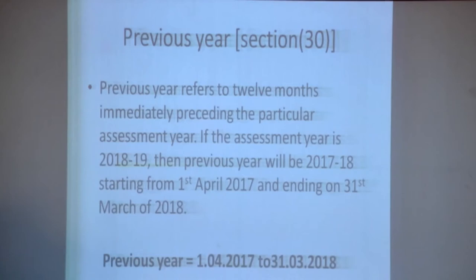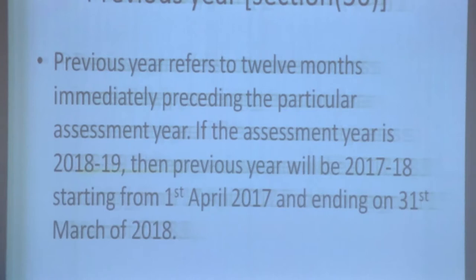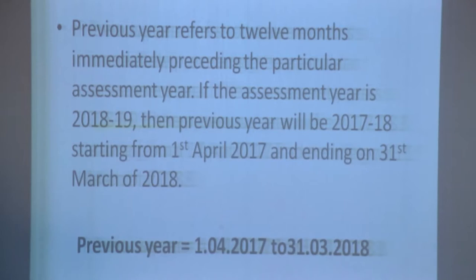Previous year, under Section 3: the previous year refers to the 12 months immediately preceding the particular assessment year. If the assessment year is 2018-19, then the previous year starts from 1st April 2017 and ends on 31st March 2018, that is 1/4/2017 to 31/3/2018.